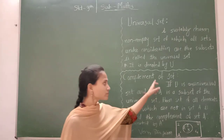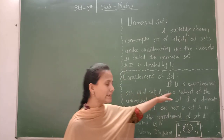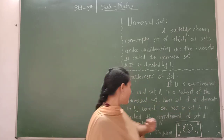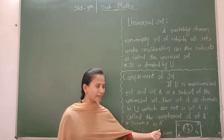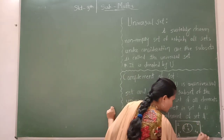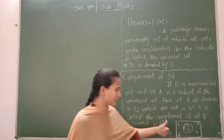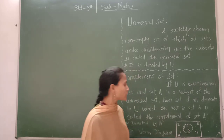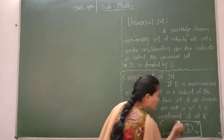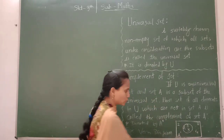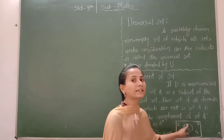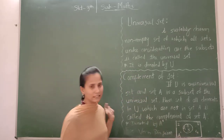Now we will see the complement of a set. If U is a universal set and set A is a subset of the universal set, then the set of all elements in U which are not in set A is called the complement set, denoted by A complement. In the Venn diagram, the universal set contains elements 1, 2, 3, 4, and set A contains 1 and 3. So the complement of A is {2, 4} — the elements in U but not in A.